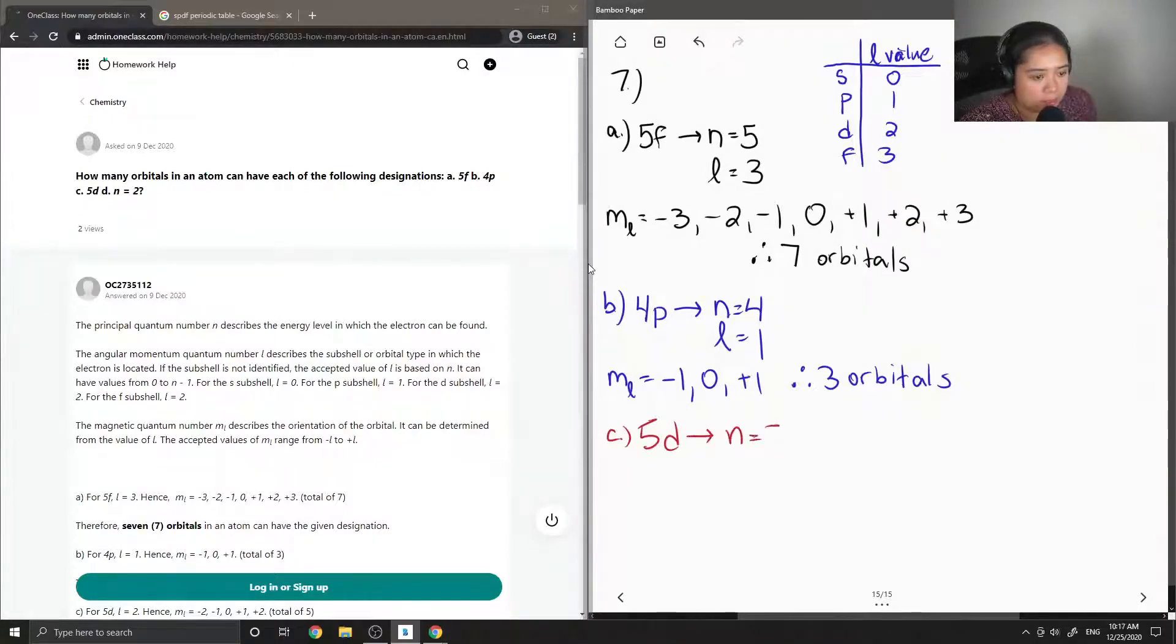n is equal to 5, l is equal to 2, and our ml value ranges from negative two to positive two. So that is five orbitals.